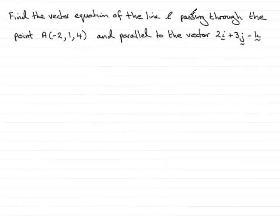In this question, we have to find the vector equation of the line L passing through the point A with coordinates (-2, 1, 4) and parallel to the vector 2i + 3j - k.